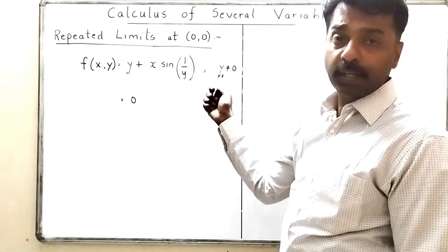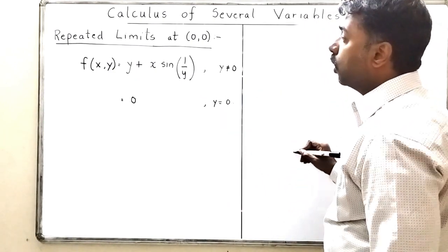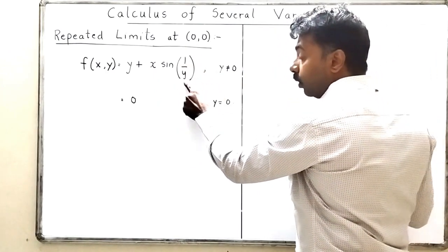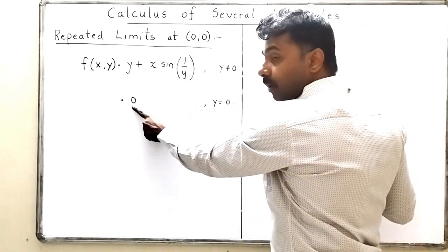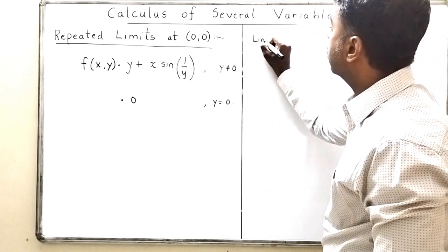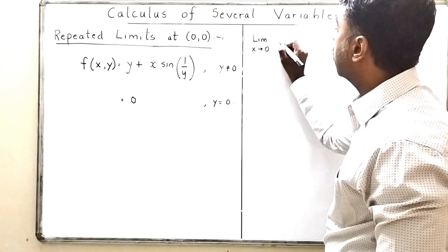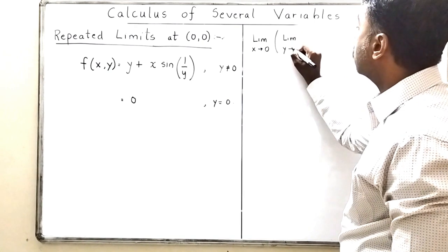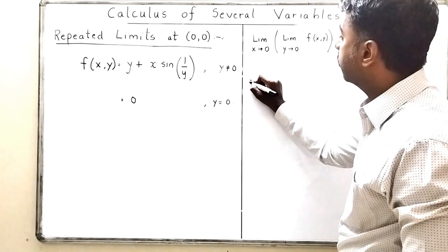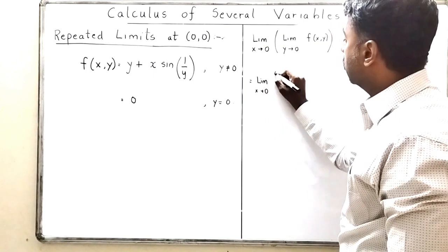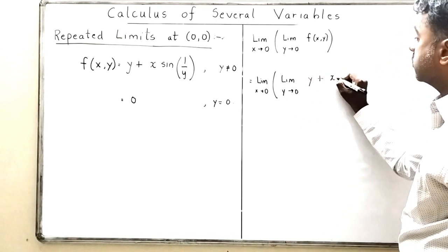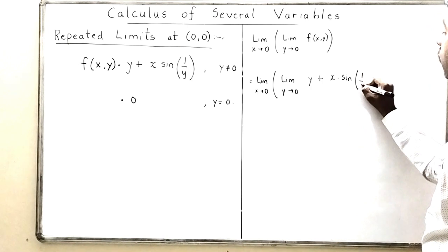Now a slightly more complicated Problem 3. The function is f(x,y) = y + x·sin(1/y) when y ≠ 0, and f(x,y) = 0 when y = 0. We find the repeated limits at (0,0). For the first: lim(x→0)[lim(y→0) (y + x·sin(1/y))].